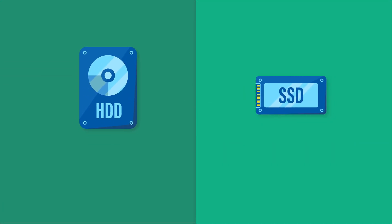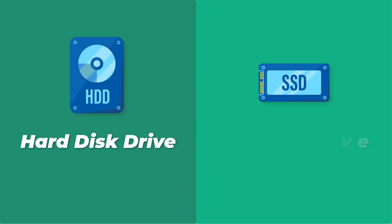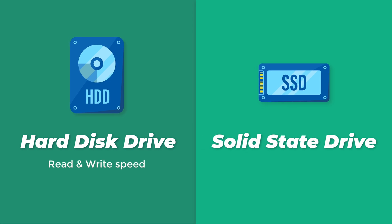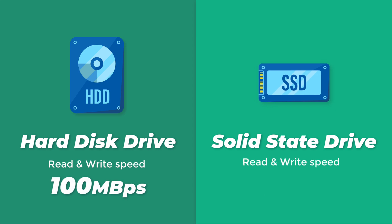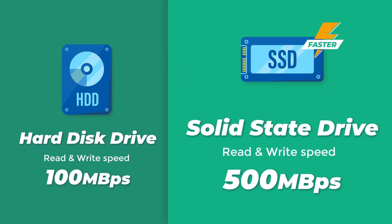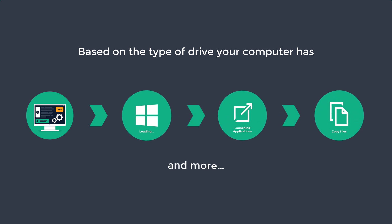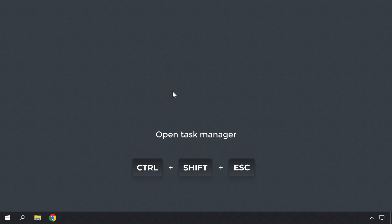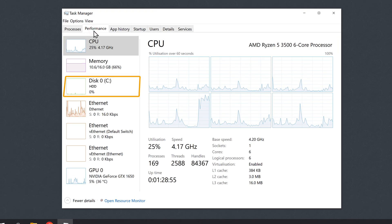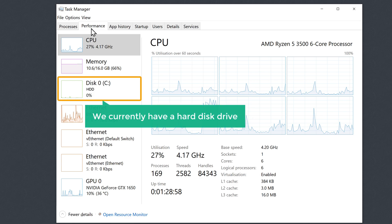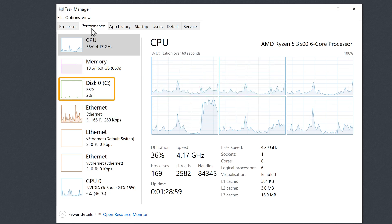Now if you want to further speed up your Windows computer, you can do that by upgrading your computer's hard drive to an SSD. Currently we have two types of storage drives: hard disk drive (HDD) and solid state drive (SSD). A hard disk can read and write files with speeds around 100 MB per second, and SSDs can read and write files with speeds around 500 MB per second. SSDs are much faster than hard disk drives, so there's a significant speed difference based on the type of drive your computer has. This includes the time it takes for your computer to load Windows, open apps, copy files, and more. To check what kind of drive you have, let's open the Task Manager by pressing Ctrl, Shift, and Escape keys. Then click on Performance, and here you can check if your computer has a hard drive or an SSD. You can see that we currently have a hard disk drive. If you already have an SSD, it will be shown here like this. So if you have a hard drive and want to greatly improve the performance of your computer, you can do that by adding an SSD. Now let's see how you can add an SSD to your Windows computer.